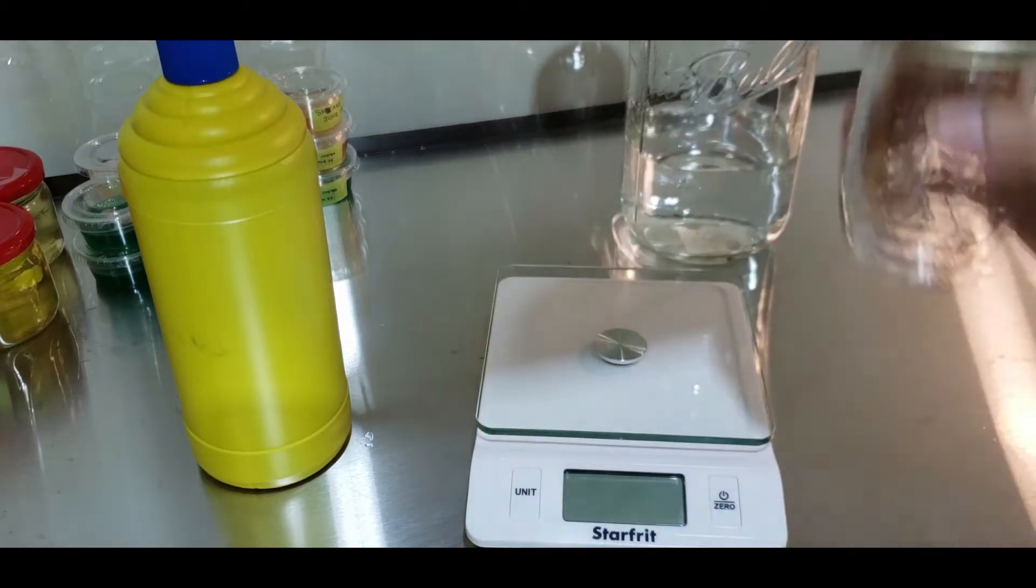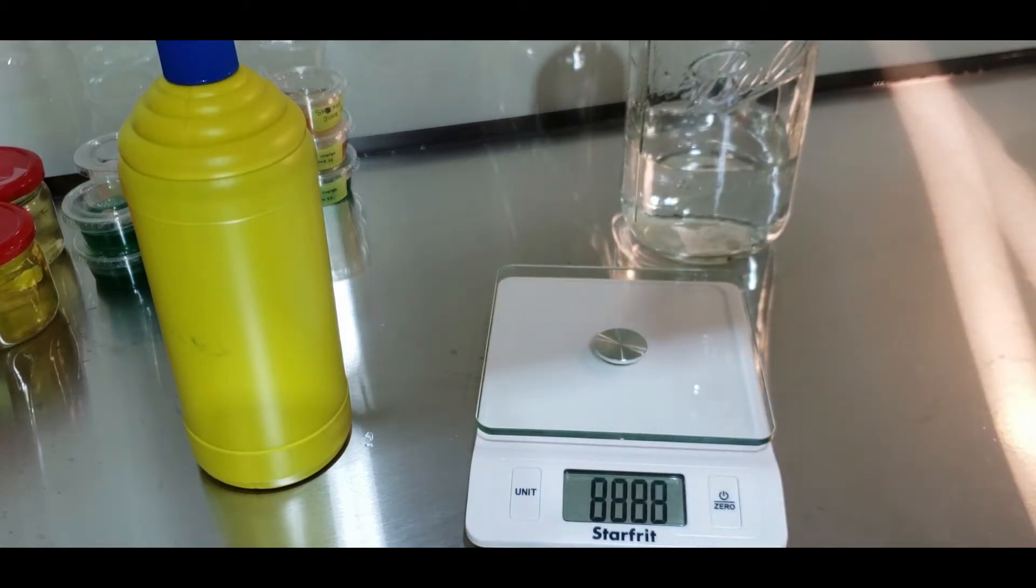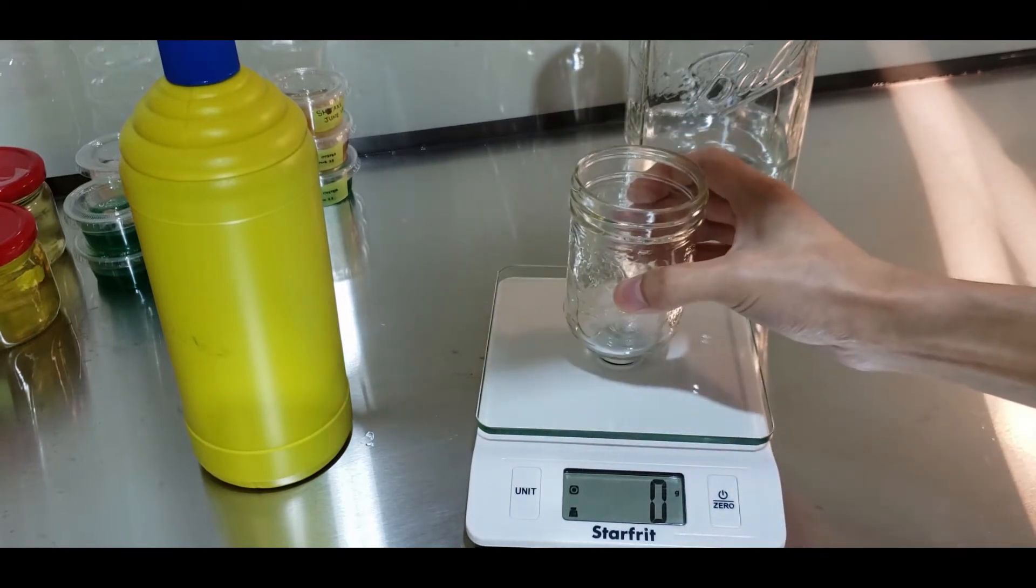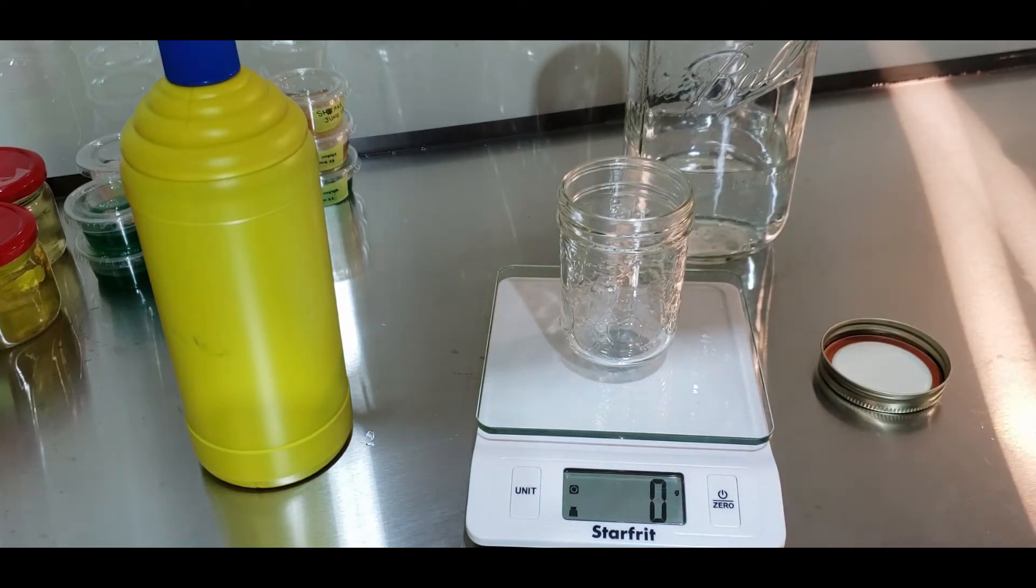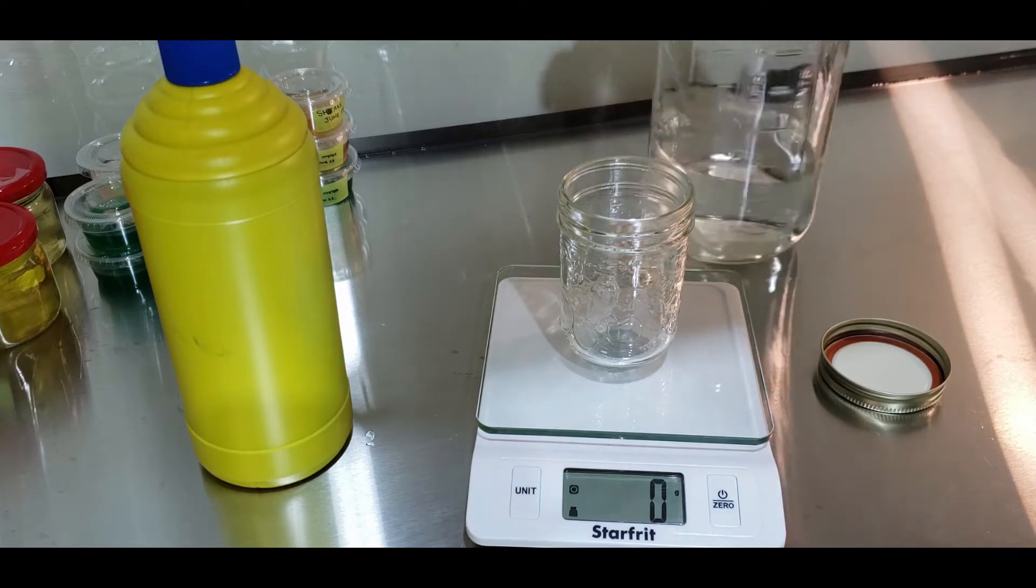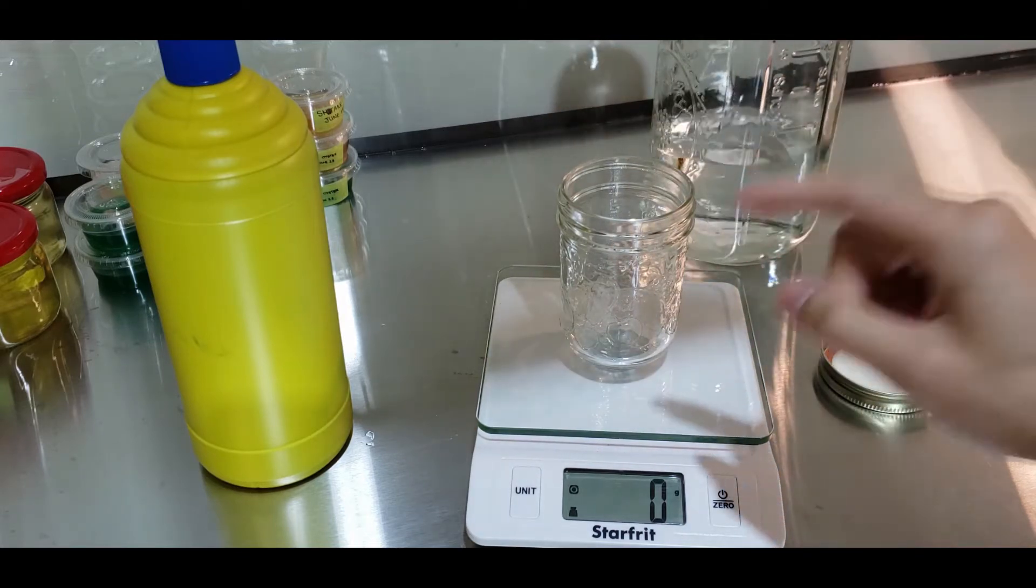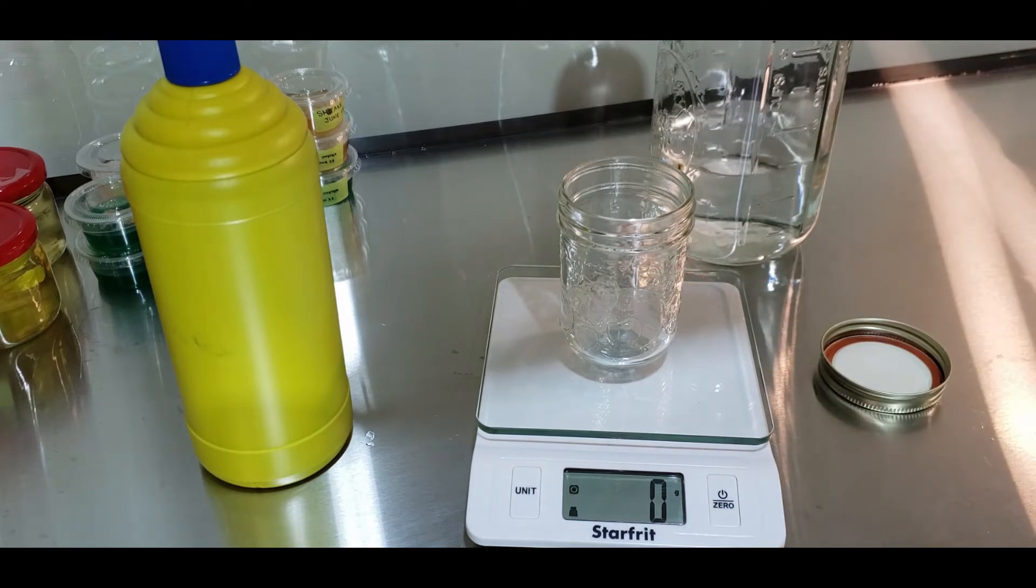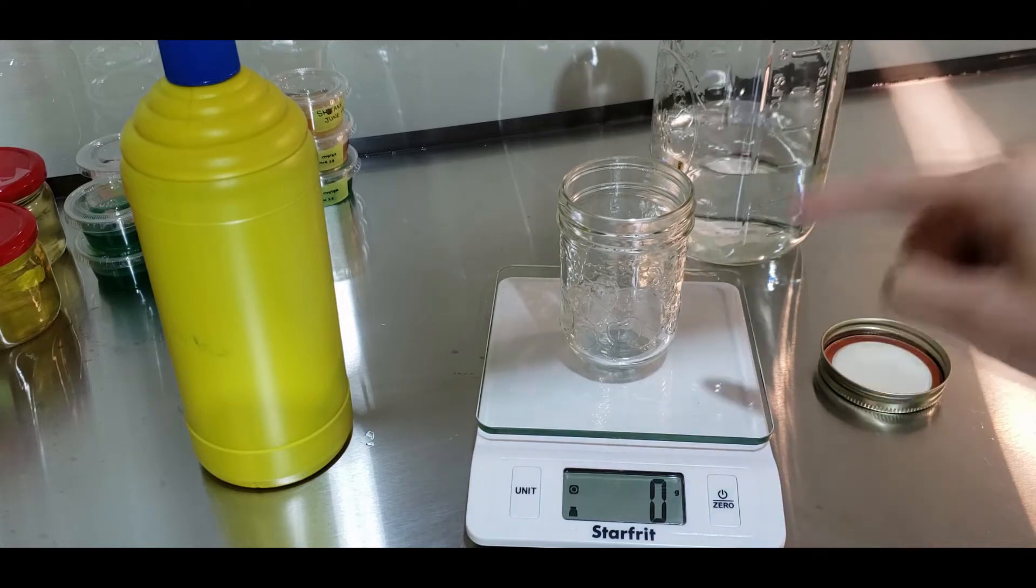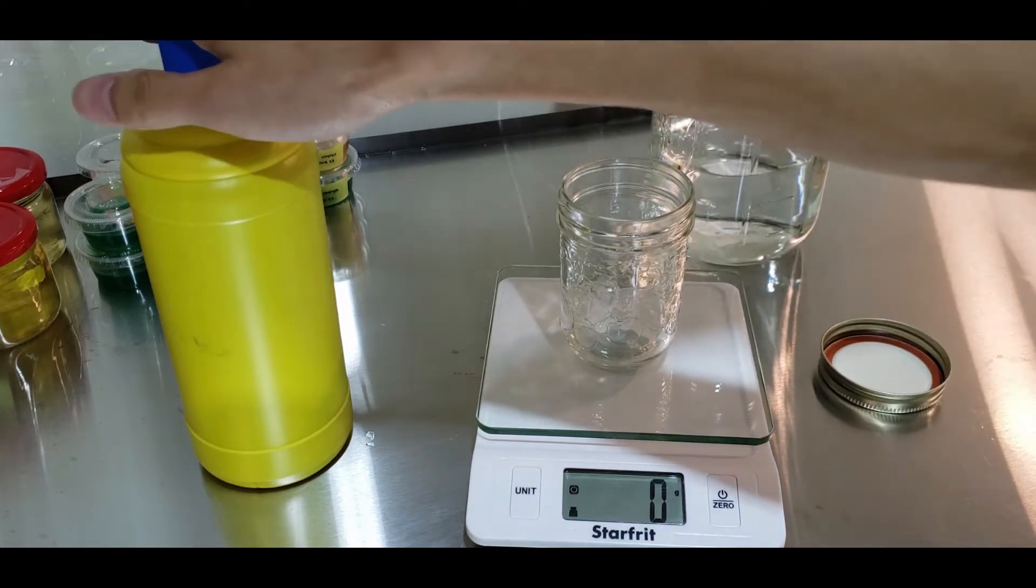So we take our jar, turn on our scale, remove the lids, let's zero it. Since we know the volume of this and every milliliter equals one gram, we know how many grams of water can fit in here. So we can just calculate our 4% weight.